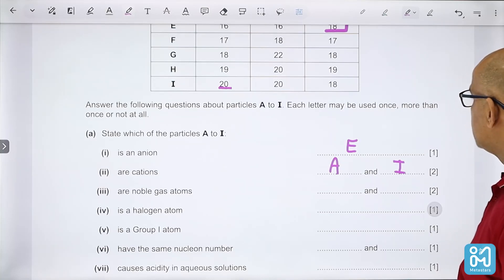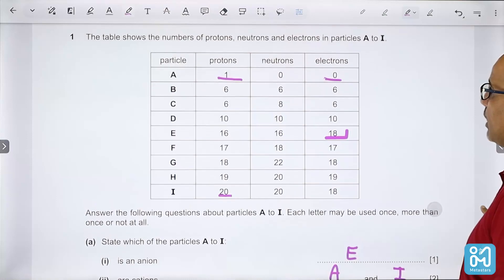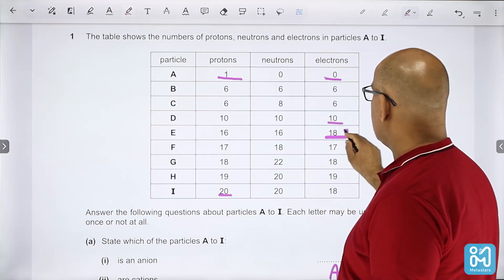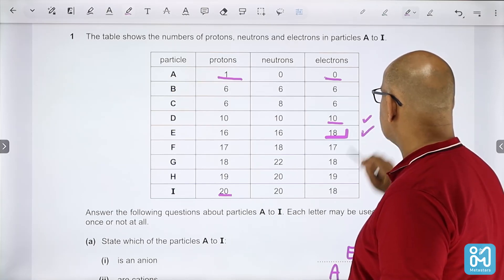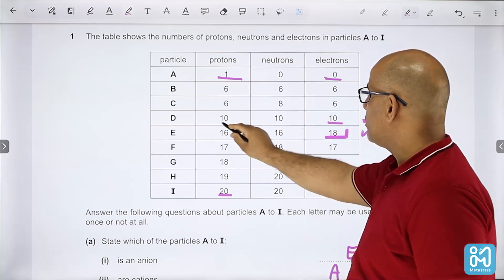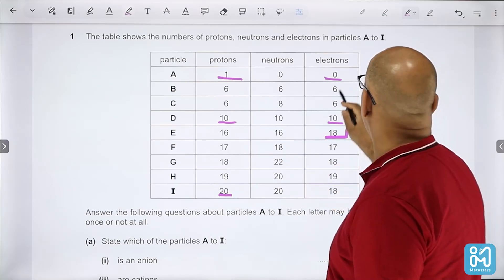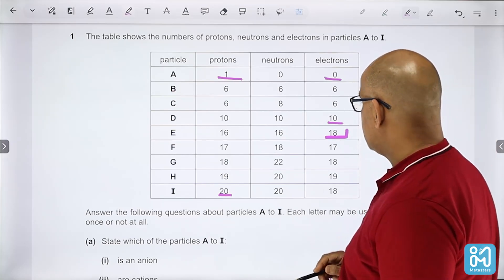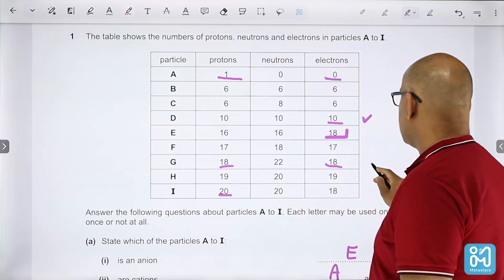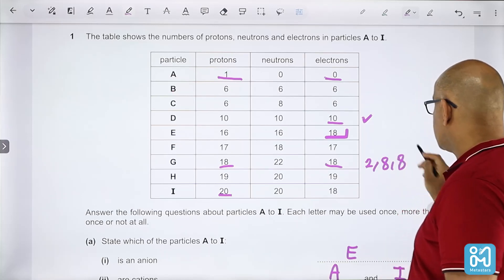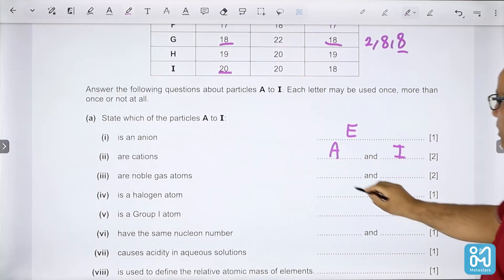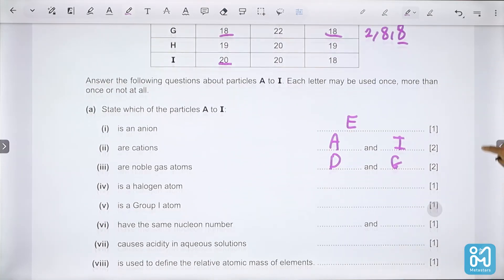Now for noble gas atoms, the noble gas atoms have a full outer shell. For D we have 18 protons and 18 electrons, its electronic structure is 2-8-8. And for G we have 2-8. So the full outer shell are D and G.